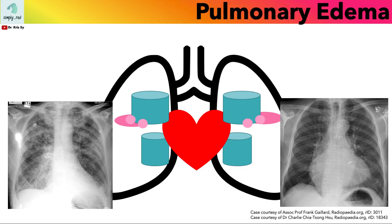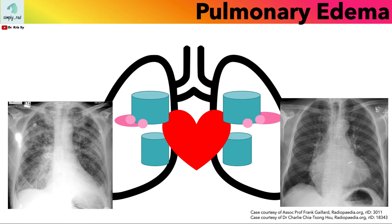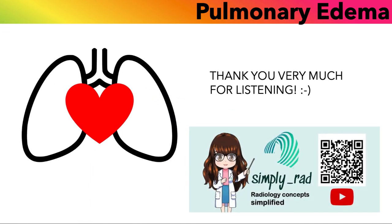Today we covered the most common type of pulmonary edema, and that is the hydrostatic type, seen in cases of cardiac failure. Depending on the degree of elevated venous pressure, one may just see cardiomegaly with cephalization, or an interstitial pattern plus alveolar or airspace opacities. Thank you very much for listening, and I hope to see you next time.